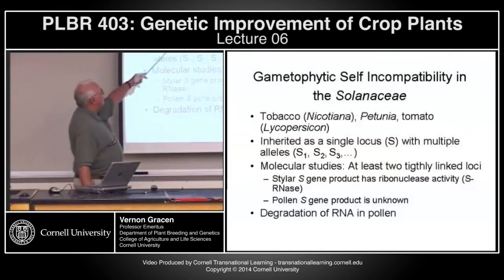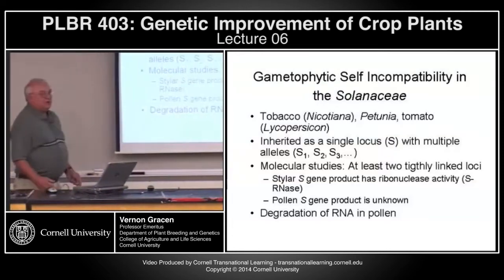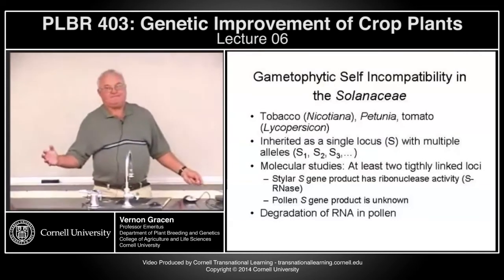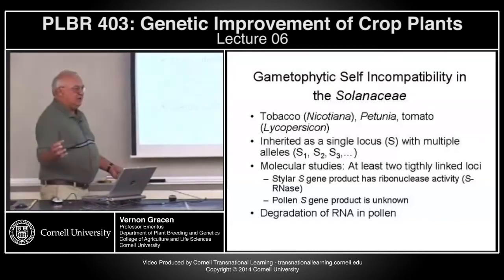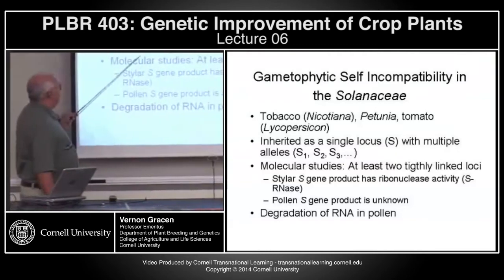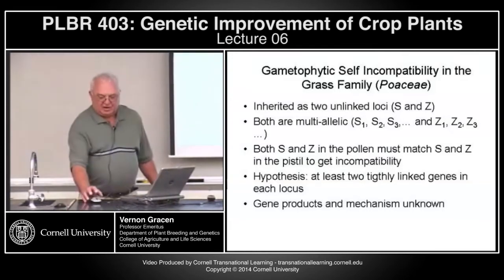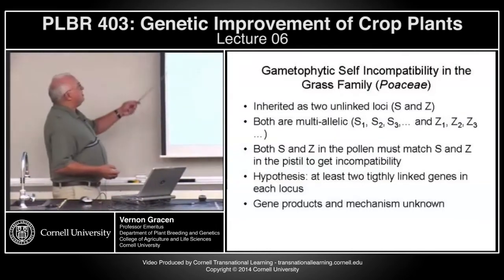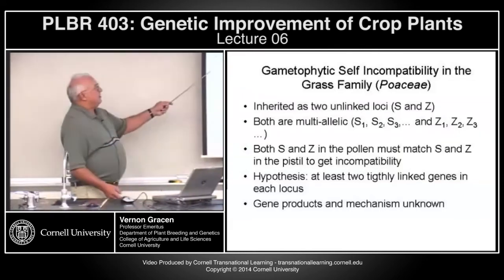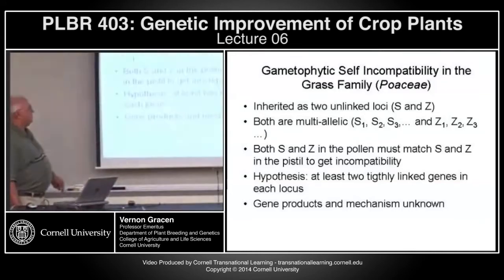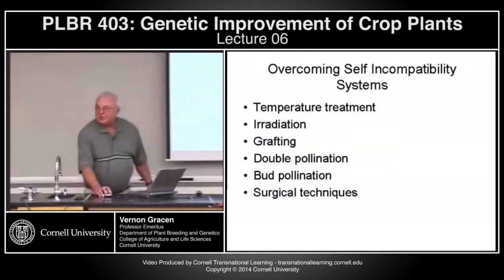Gametophytic incompatibility is important in solanaceous crops — tobacco, petunia, tomato. It's inherited as a single locus with multiple alleles and no dominance, because alleles are expressed in haploid gametophytic tissues. Molecular studies show at least two gene products, with the final result being RNA degradation in the pollen grains. In grasses, gametophytic incompatibility is inherited at two unlinked loci — the S locus and the Z locus — and both S and Z must match in the pistil to produce incompatibility. Each locus appears to be comprised of at least two tightly linked genes.